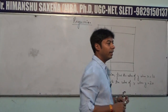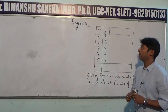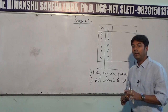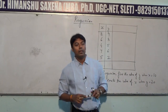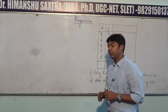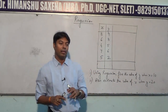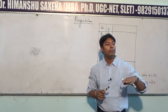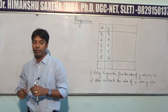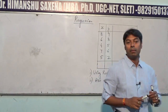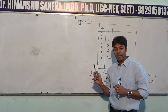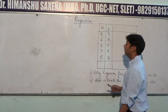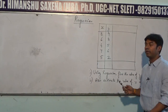The topic for today is regression. Remember the meaning of the word regression — it is a process of estimation, a method used for forecasting. Regression is basically a process of establishing a relationship between two variables, and then with the help of one variable you estimate or forecast the value of another variable. Regression is a method of forecasting and estimating values.